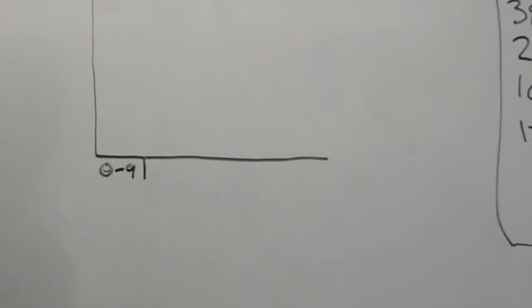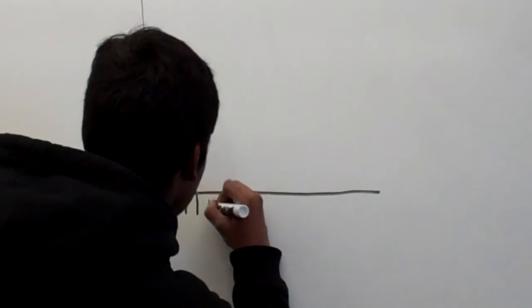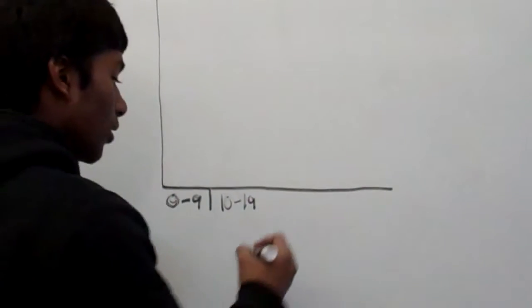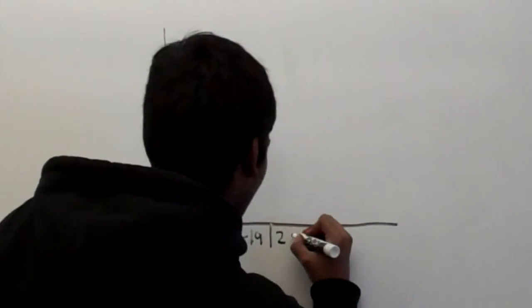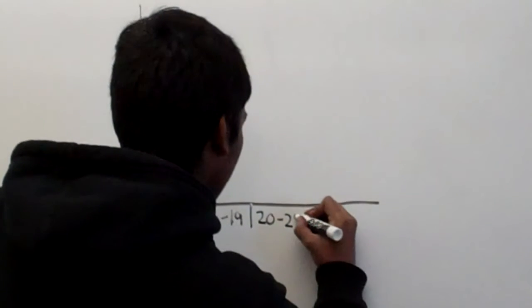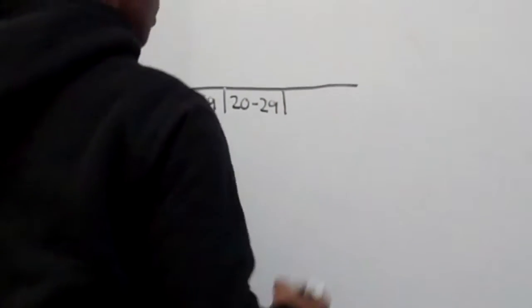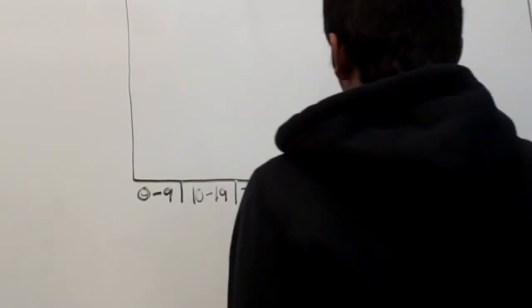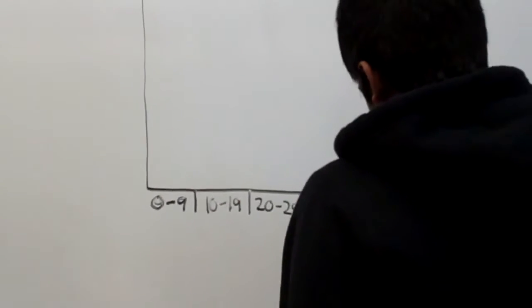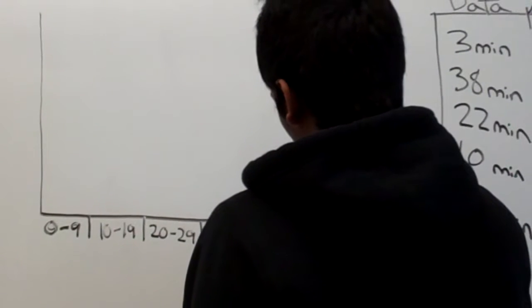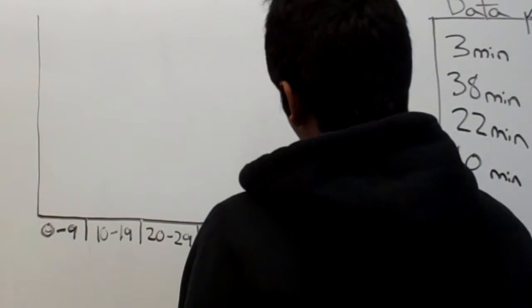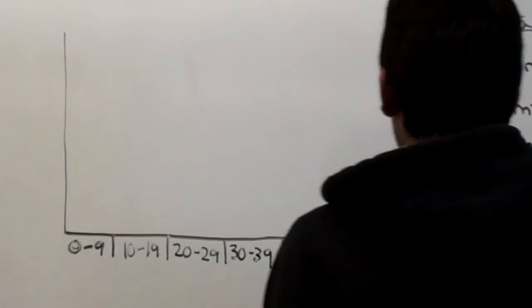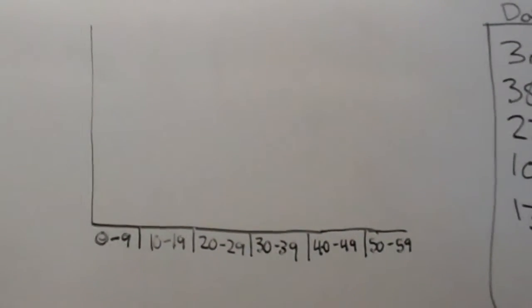Our next one is going to be ten to nineteen, twenty to twenty-nine, thirty to thirty-nine, forty to forty-nine, and fifty to fifty-nine because there's one person who takes fifty minutes to get to school.